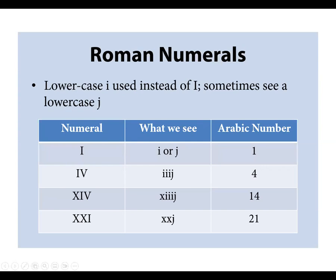You also need to be aware of how Roman numerals were typically represented in older manuscripts. The Roman numeral one often appears as a lowercase i, or if at the end of the numeral as a lowercase j. For example, the numeral 21 appears as 'XXJ.' The number 14 is represented by X, three i's and a j — unlike what we might more commonly expect.